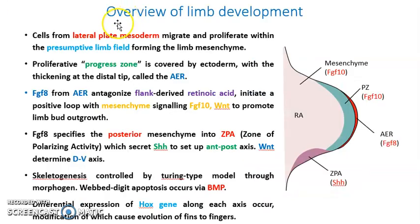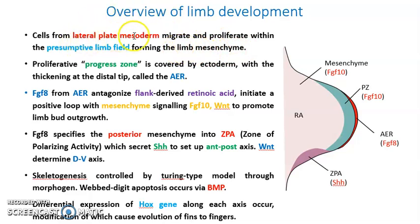Coming to the overview of limb development: first, cells from the lateral plate mesoderm migrate and proliferate within the presumptive limb field, forming the limb mesenchyme. The cells which form the limb are mesenchymal cells derived from the lateral plate mesoderm, and they accumulate in the region that forms the limb — the presumptive limb field.